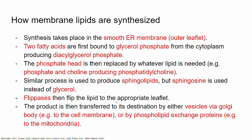After the production of whatever phospholipid or lipid is needed by the cell, we have something called flipases. These are proteins or enzymes that flip the lipid to the appropriate leaflet. Since synthesis takes place in the outer leaflet, certain types of lipids are assigned to certain leaflets. For example, phosphatidylcholine usually exists in the outer leaflet, while phosphatidylserine and inositol are made for the inner leaflet of cell membranes or organelle membranes.